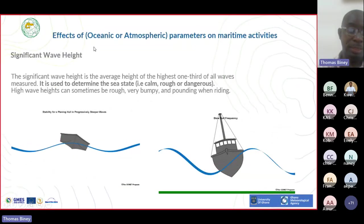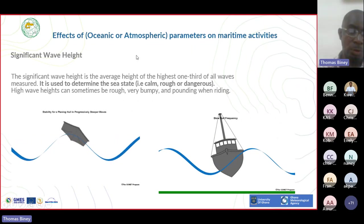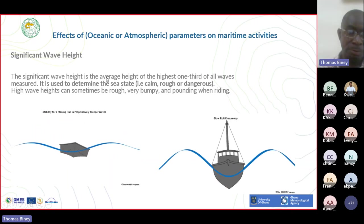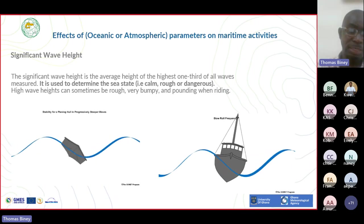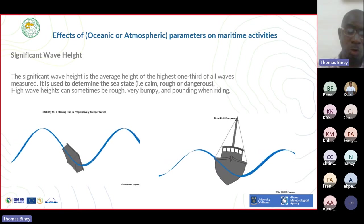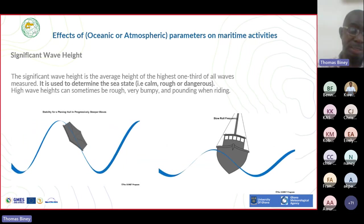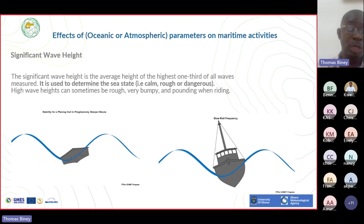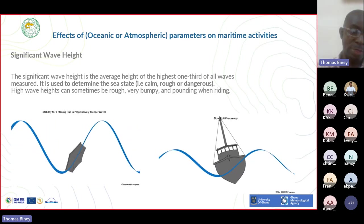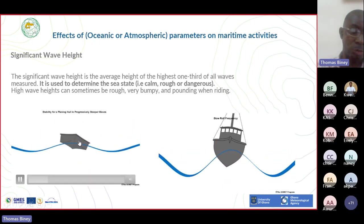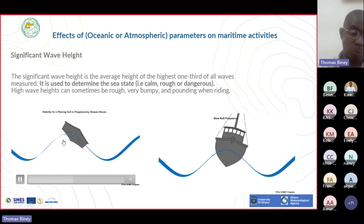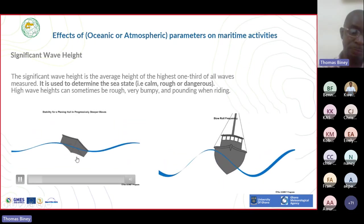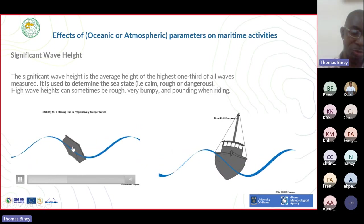Significant wave height is very key because it is usually the parameter used to determine the state of the sea - whether it's going to be rough, calm, or dangerous. This definition is dependent on agreement with stakeholders, though the WMO has its own threshold. There can be a local agreement depending on the kind of vessels that work within your territorial waters. When the significant wave height was low, the vessel could move smoothly, but as soon as the wave height went very high, the vessel couldn't move as it should and it capsized.